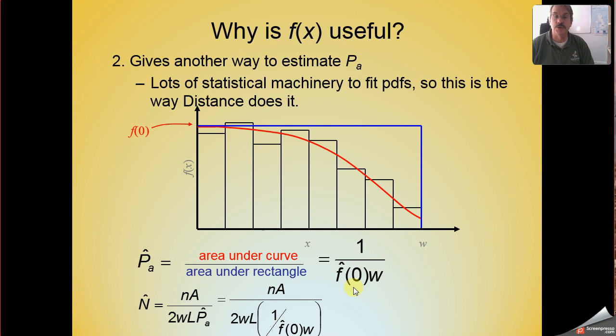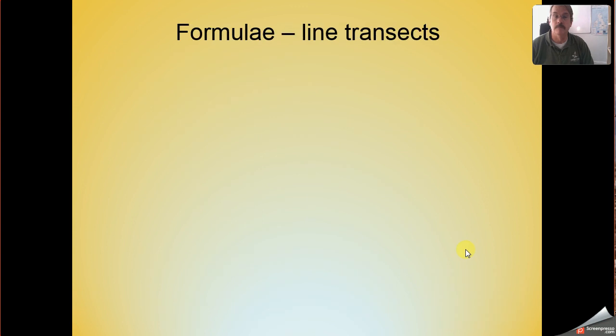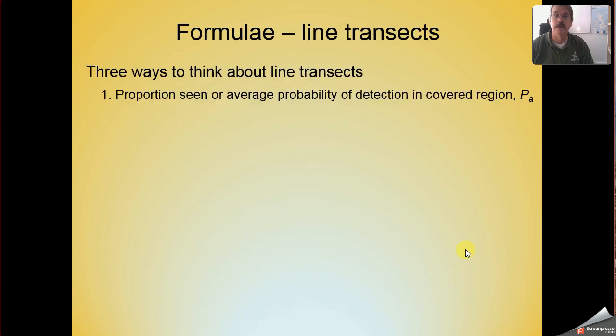If I substitute this expression for P sub a into our previous expression that allowed us to estimate n, we end up with this equation. That equation can be simplified to this quantity. And notice what happens in this simplification. The w's, the strip width, cancel. I'll save this question. I'll let you think about it for a minute.